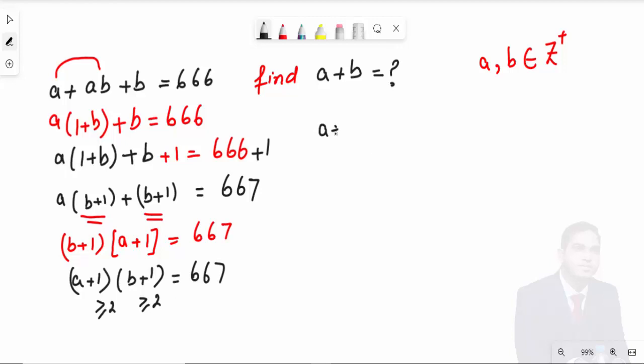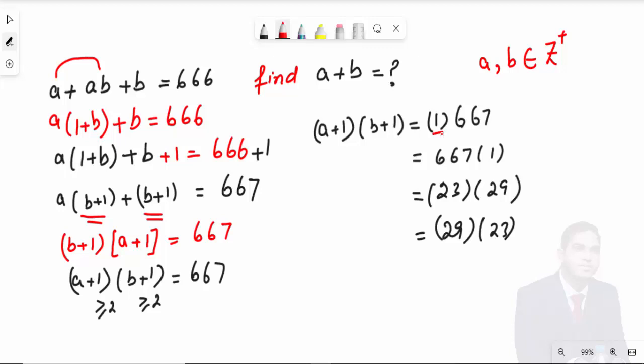In this case, we will make factors. The first scenario is 1 and 667, the second scenario is 667 and 1, the third is 23 times 29, and the fourth is 29 times 23.